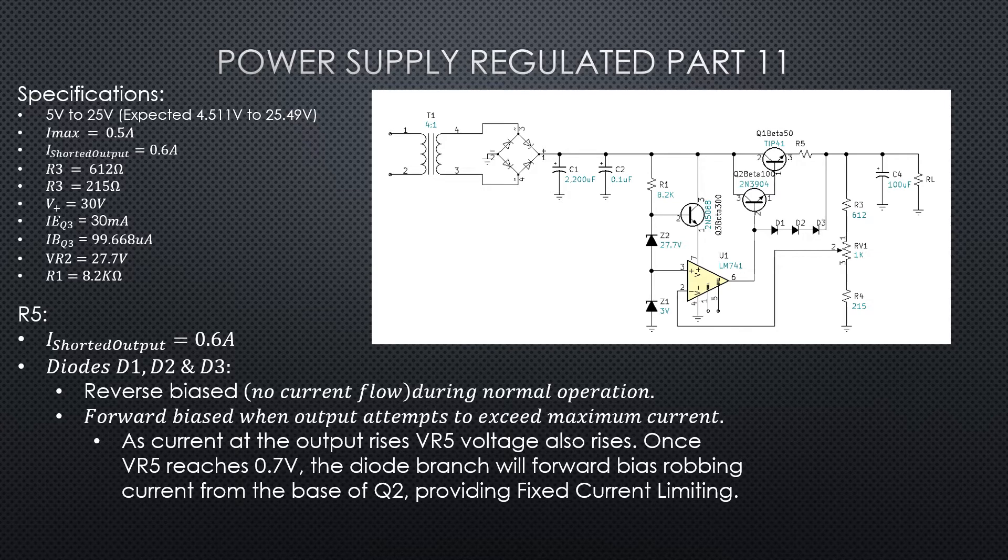Okay, so when somebody comes along and starts trying to pull more current than our 0.6 amps, what's going to happen is the voltage across R5, VR5, starts to go up. If you can see there, you've got three diodes in series, so that's 2.1 volts. You've got a VBE of Q2, you've got a VBE of Q1. You can see that as that voltage VR5 starts to rise, once it hits 0.7 volts, you've got enough voltage there to bias D1, D2, and D3 on. So they'll actually forward bias at that point and turn on, and they'll hold VR5 at that 0.7 volts, and that's what's providing our fixed current limiting.